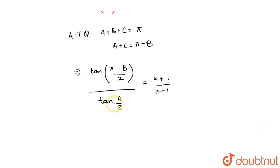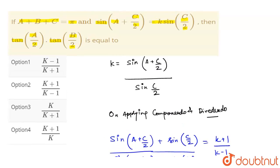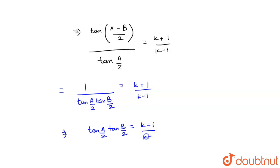Can you see the pattern? This can be written as 1 upon tan(a/2) times tan(b/2), because tan(π minus θ) equals tan(b/2). So we have 1 upon tan(a/2) times tan(b/2) equal to (k+1)/(k-1). We need to find tan(a/2) times tan(b/2), so just reciprocate it. Therefore tan(a/2) times tan(b/2) equals (k-1)/(k+1).